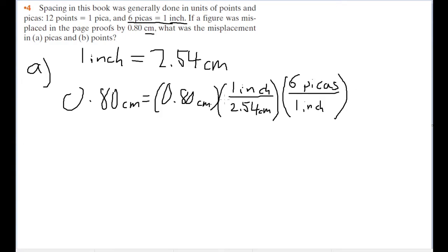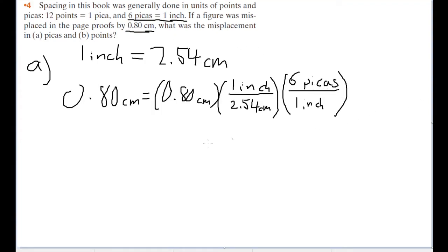And all this is equal to... We're given this value 0.80 in 2 sig figs. So I'm going to have the answer rounded to 2 significant figures. Which is why I'm going to use my squiggly equal sign. So it's about equal to 1.9 picas.